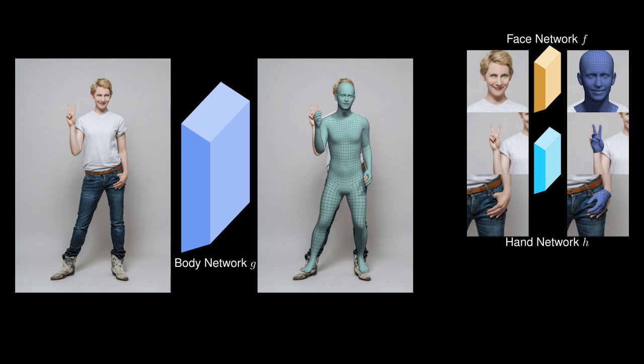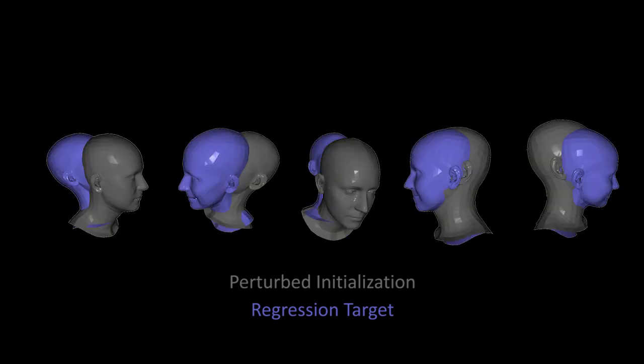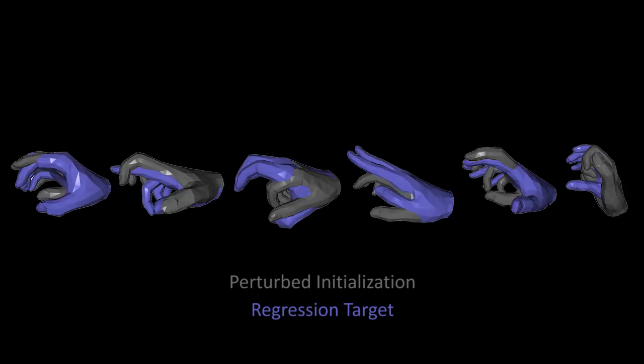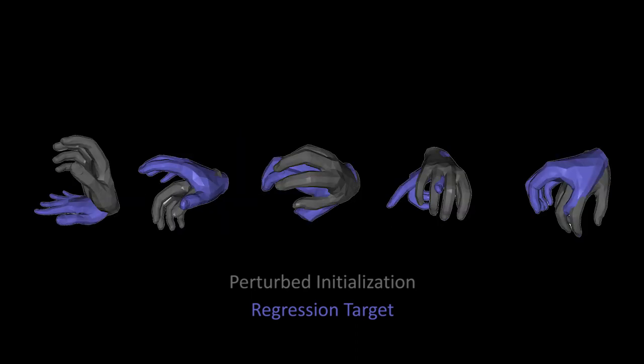The body, face and hand sub-networks are similar to the popular HMR architecture. However, the latter differ from HMR with respect to initialization. Specifically, they are conditioned on the earlier rough face and hand predictions of the body network, to take the full body context into account. Since the initial estimates will be inaccurate, the sub-networks need to learn to start from any initialization. We achieve this robustness by systematically perturbing the head and hand configurations for the hand and face only data.